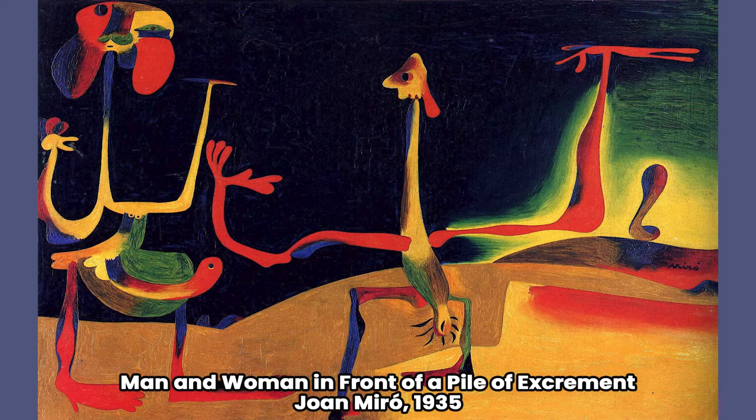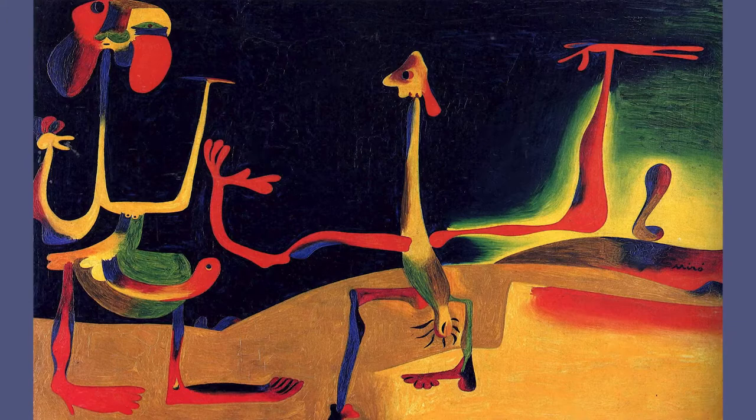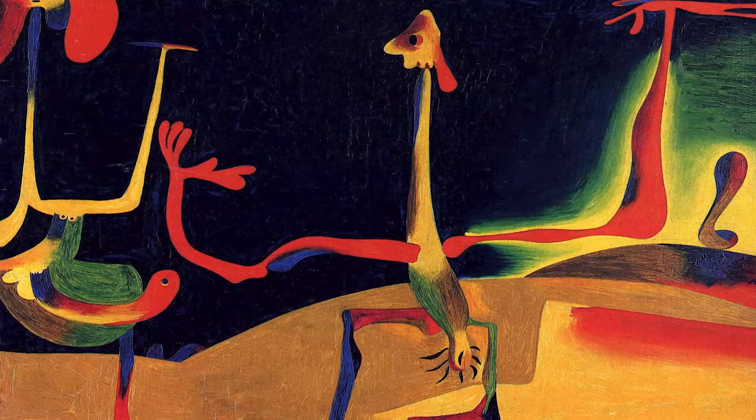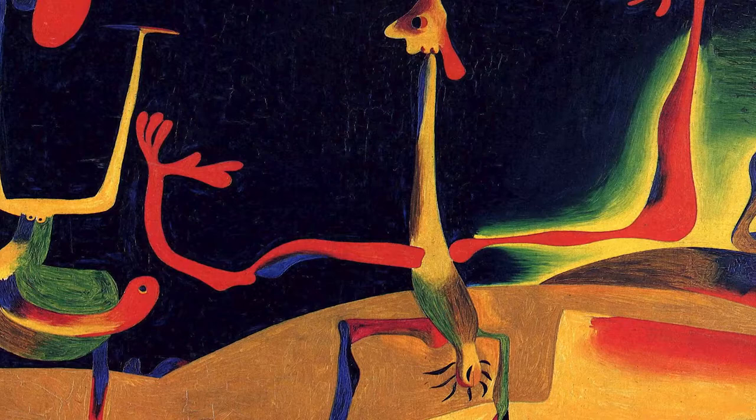Man and Woman in Front of a Pile of Excrement — artwork by Joan Miró. In 1934, Spain was becoming an increasingly polarized social powder keg. The surrealists, great premonitors, were the first to smell that something was going to happen soon, and among them, the child of the group, Joan Miró.